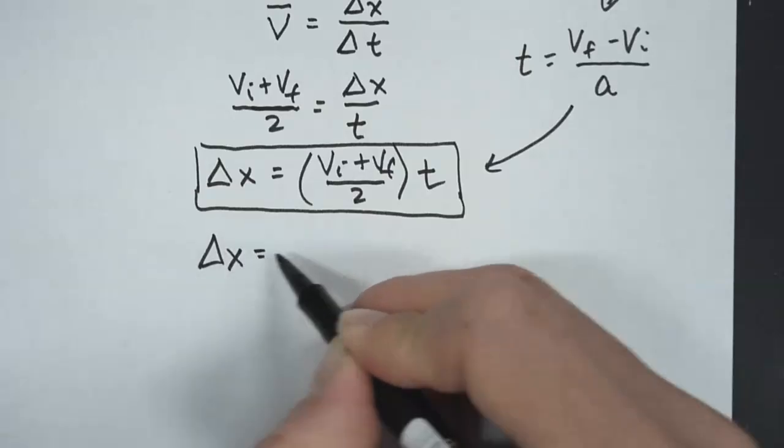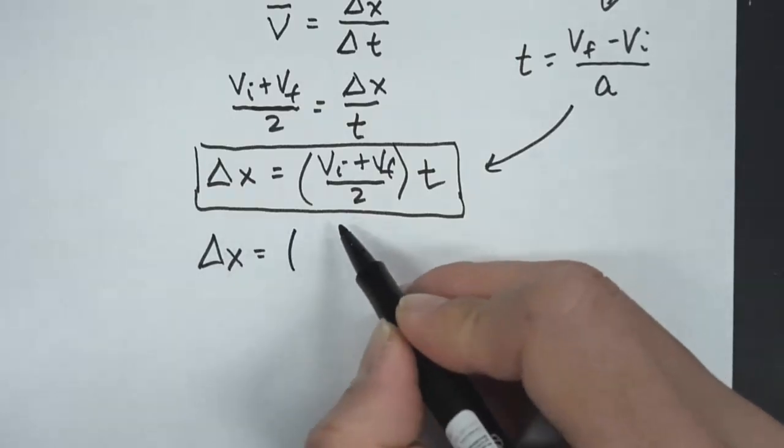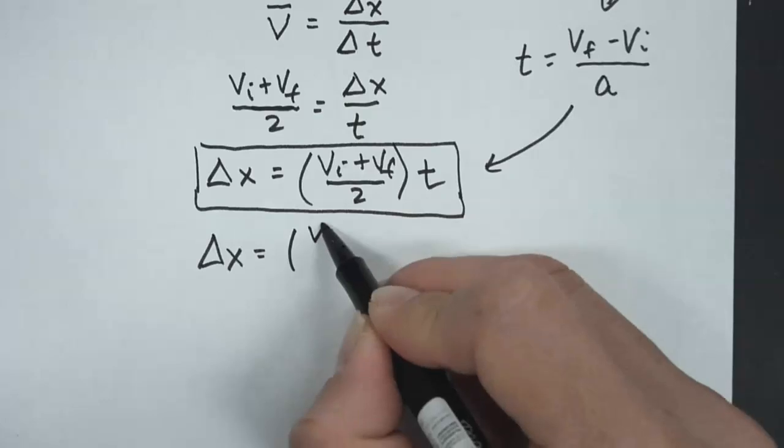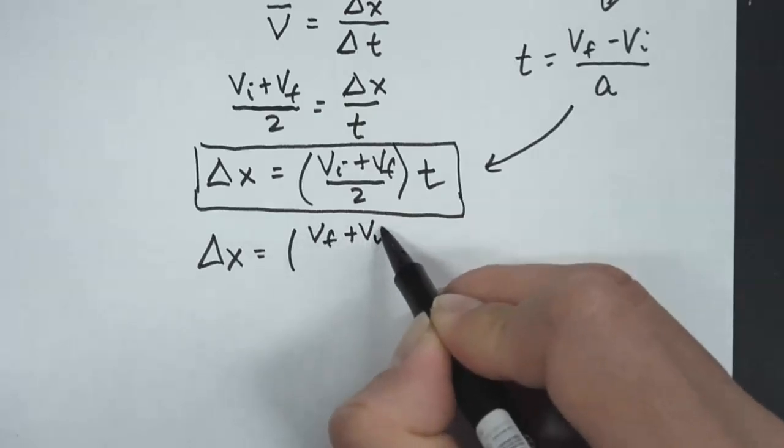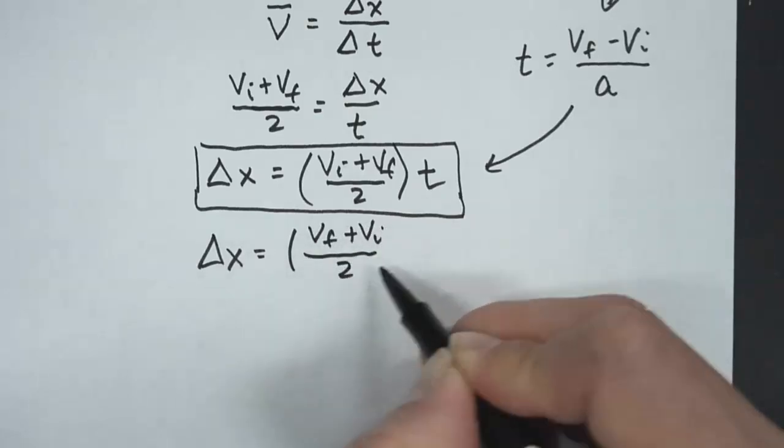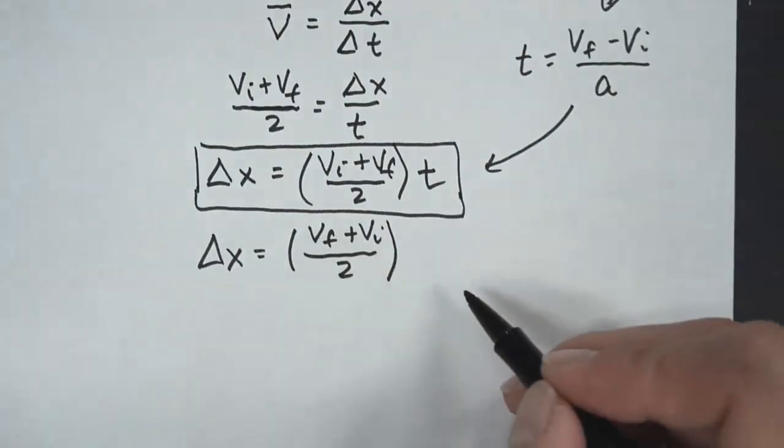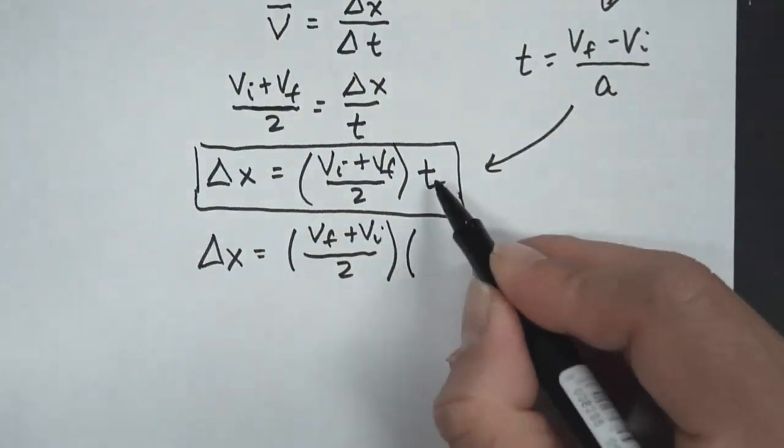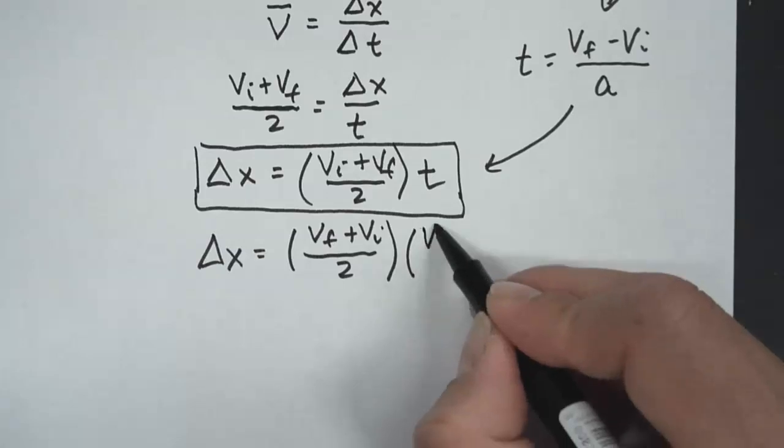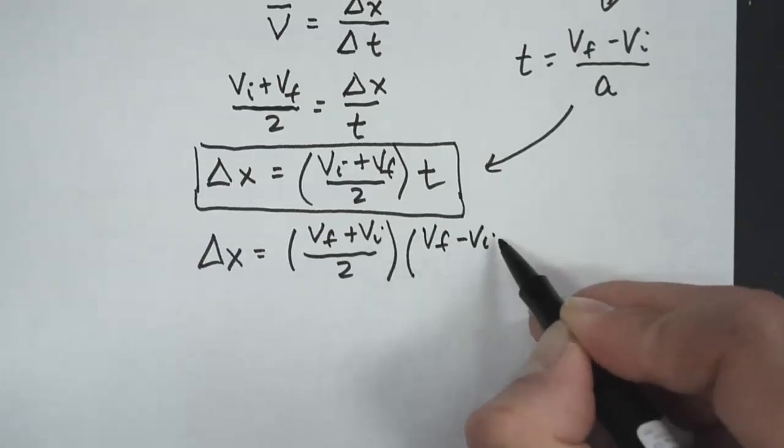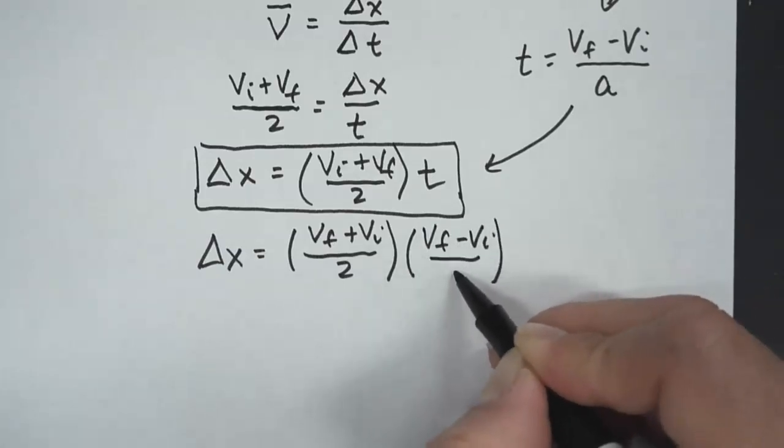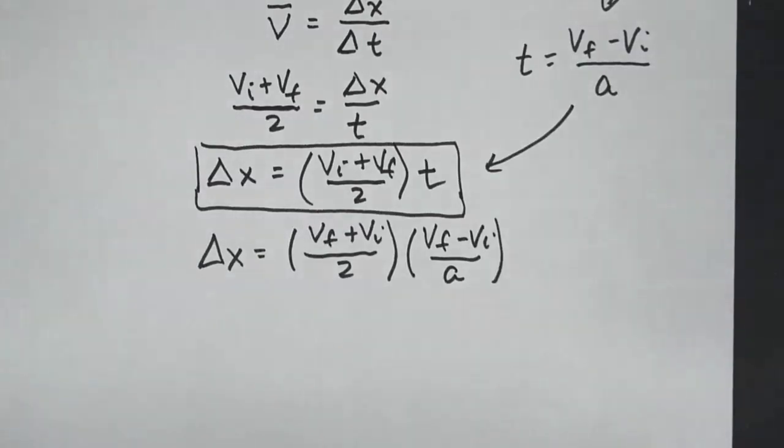So we get delta x equals, and I'm going to flip this a little bit, you'll see why in a moment, but vf plus vi, I'm just going to reverse that order, it's the same, it's still equal to the same thing, times, and I'm going to do a substitution here, vf minus vi divided by a.